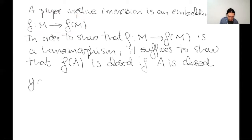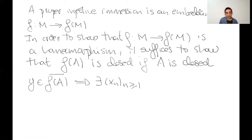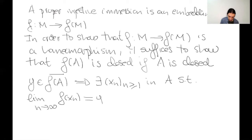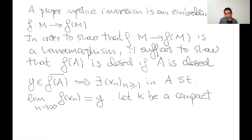Let's consider a point Y in the closure of the image of A. Since it is in the closure, there exists a sequence of points in A such that the limit of the images of these points is Y. We have to use at some point that the map is proper, so we are going to consider a compact neighborhood of Y and exploit the fact that its pre-image is compact.